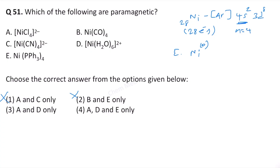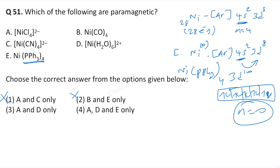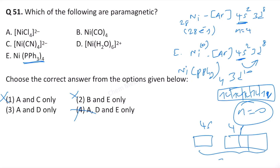For complex E, nickel is in zero oxidation state because triphenylphosphine is a neutral ligand. The configuration is argon, 4s², 3d⁸. However, once the triphenylphosphine ligands form a complex with the metal, the 4s² electrons jump to 3d⁸, making it 3d¹⁰ once again. So there are no unpaired electrons — all electrons are paired — making this a diamagnetic complex. The hybridization is sp³ and the geometry is tetrahedral.